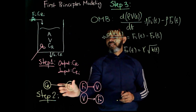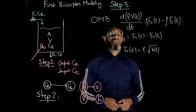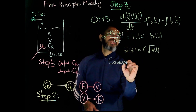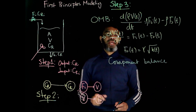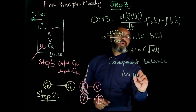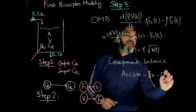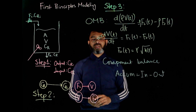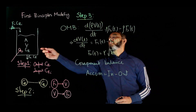To relate these two variables, we need to write down the component balance. There is no reaction term involved here, so the component balance will be straightforward: accumulation equals in minus out.